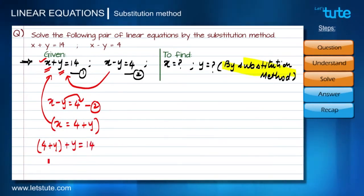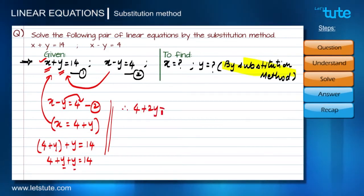After opening the bracket I will get four plus y plus y equals to fourteen, and therefore the two y's are added to give two y. The equation becomes four plus two y equals to fourteen. Let's transfer this four to the right hand side so that two y becomes 14 minus 4.